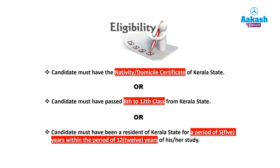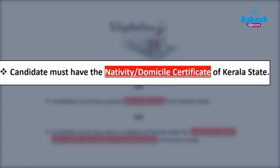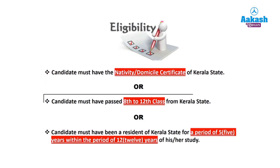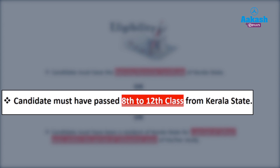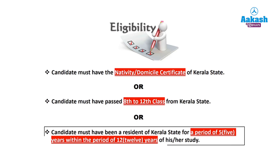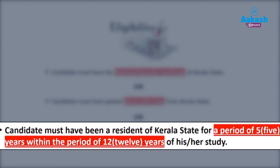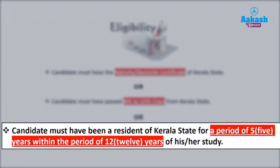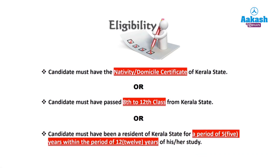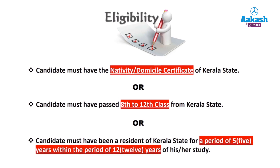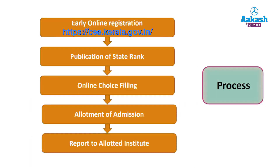The eligibility criteria to get admission in medical colleges of the Kerala state: first, the candidate must have a nativity or domicile certificate of the Kerala state, or must have passed Class 12 from the Kerala state. Additionally, the candidate must have been a resident of Kerala for a period of five years within the 12 years of their study.